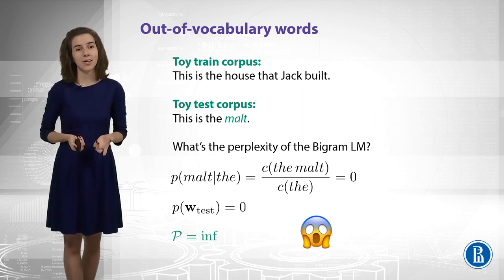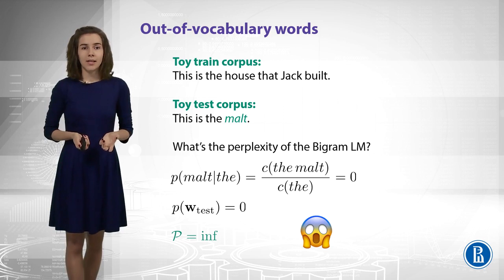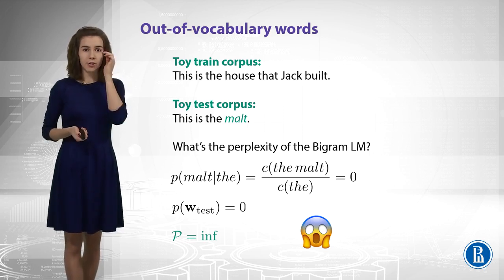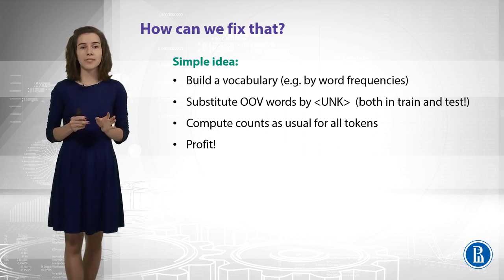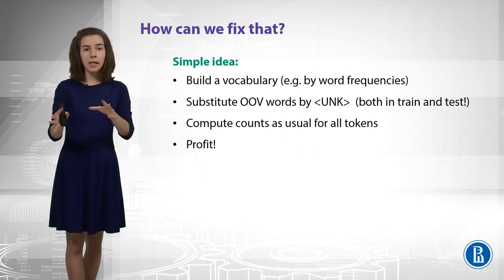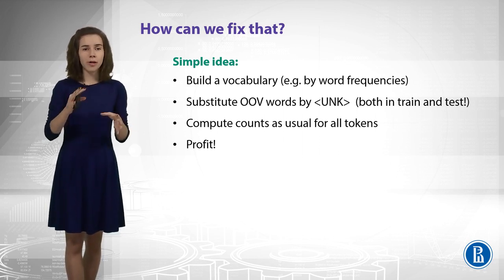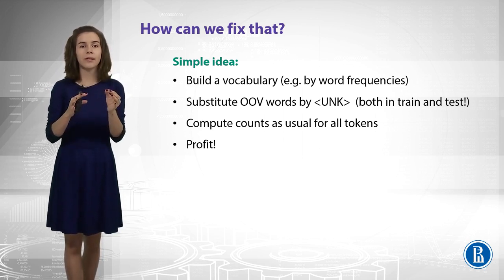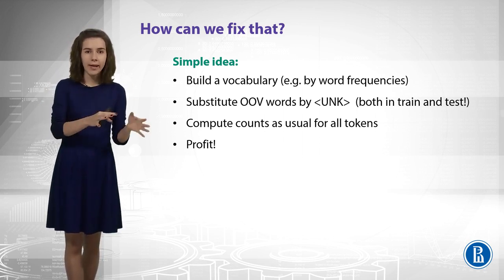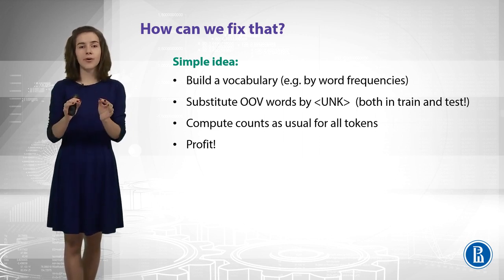How can we fix that? What can we do with that? Well, there is actually a very simple way to fix that. So, let us say that we have some vocabulary, actually that we build some vocabulary in beforehand, just by some frequencies, or we just take it from somewhere, and after that we substitute all out-of-vocabulary tokens for train and for test sets for a special UNK token.